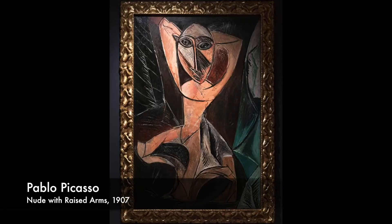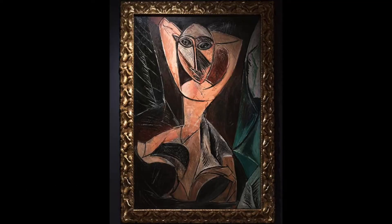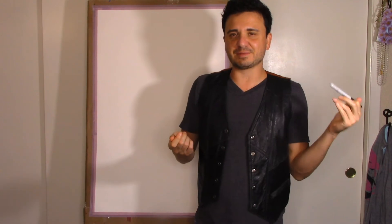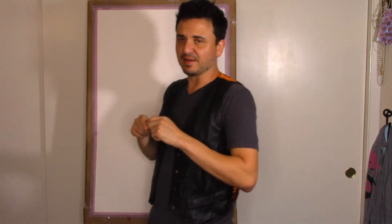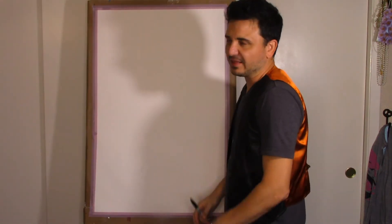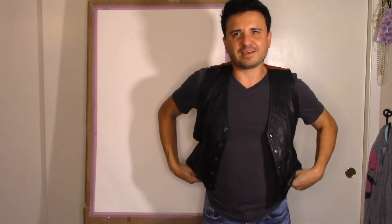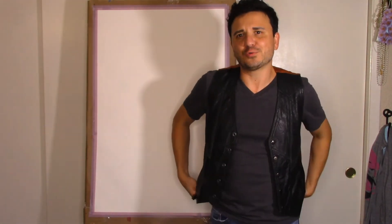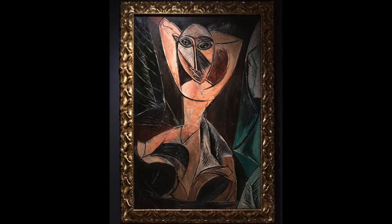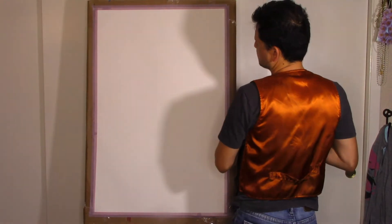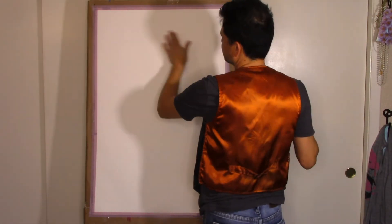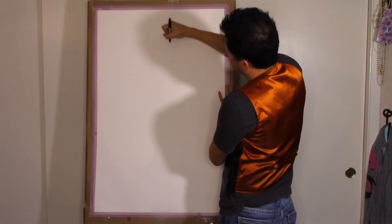What I like about cubism is there's really no way to mess up — everything can be justified. This one he actually painted in 1907. I always like to start with the eyes, and it's going to be towards the top. Start with the little iris.